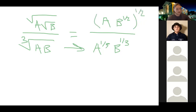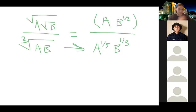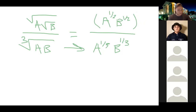That one-half distributes into A and B individually. So we get A to the one-half, and B becomes B to the one-half times one-half, which is B to the one-fourth. So the numerator simplifies to A to the one-half times B to the one-fourth.